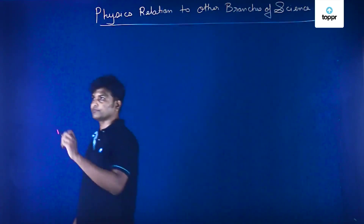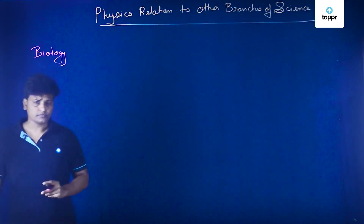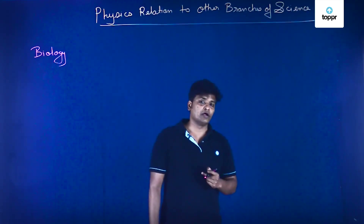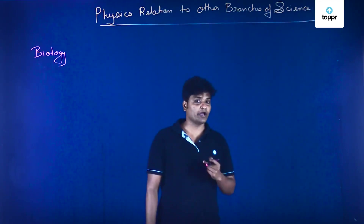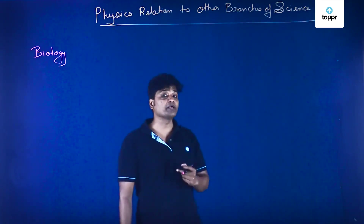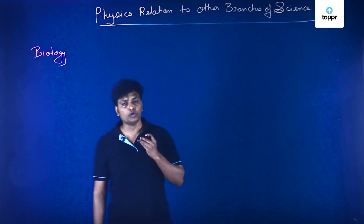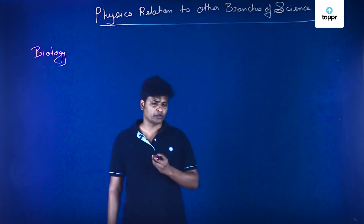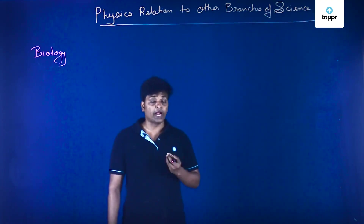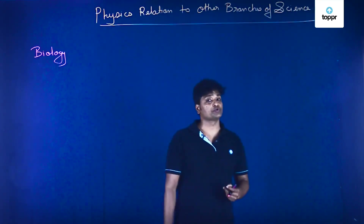Let us start with biology. A very important application of physics in biology is the microscope. The microscope is an application of optical physics — it is an application of optics. Using a microscope, we can look at very small microorganisms which we cannot see with our naked eyes.